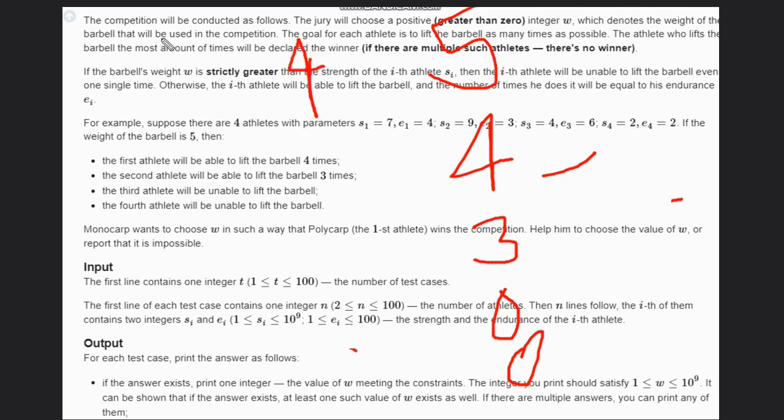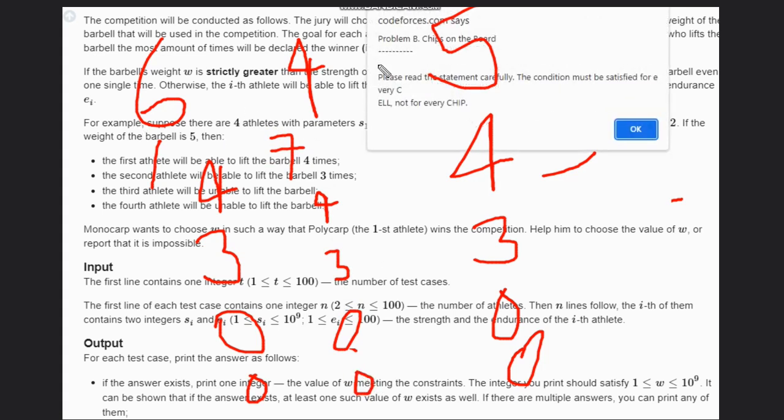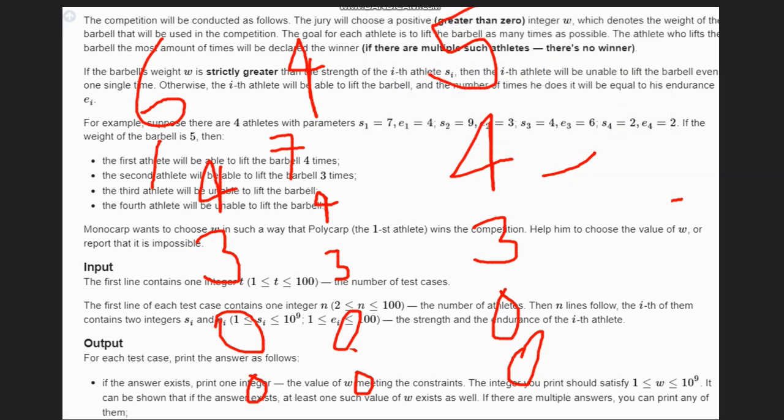If you choose six, then it's the same case. Four, and second one's strength is nine, so it can also lift three times. Third one unable to lift, fourth one unable to lift. So in six also it can win. And at seven, the same scenario: four, three, zero, zero. So these are the three ways: five, six, and seven.